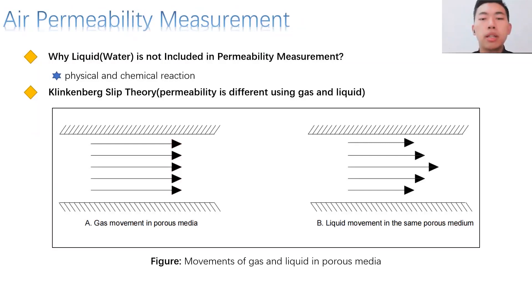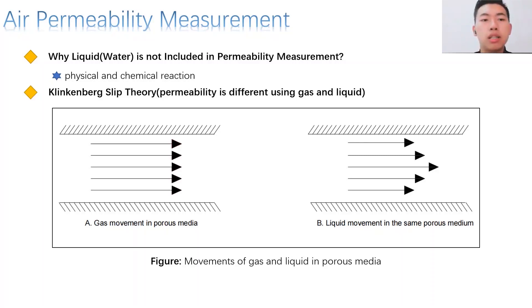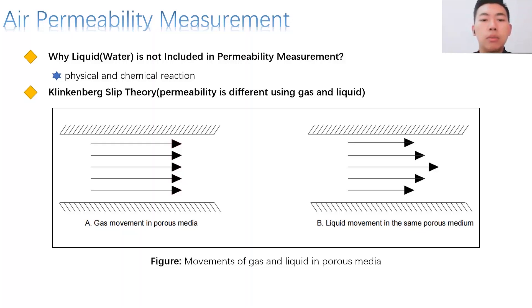The air permeability method is another effective method that is widely used by earlier scholars. In this method, the terminology 'air' refers to nitrogen. It may call into question why liquid like water is not included in the permeability measurement — it is because physical and chemical reactions are likely to happen during the experiment. These two figures shown on the slides demonstrate that the fluid flow of gas is more even than that of liquid when entering the rock samples. As a result, the permeability measured using gas is bigger than using liquid. This movement is related to Klinkenberg's slip theory.